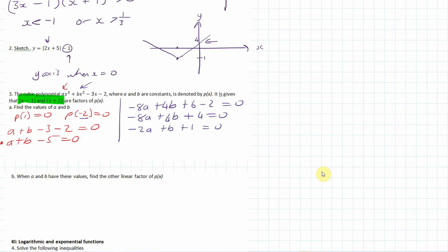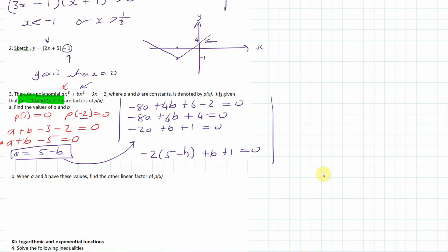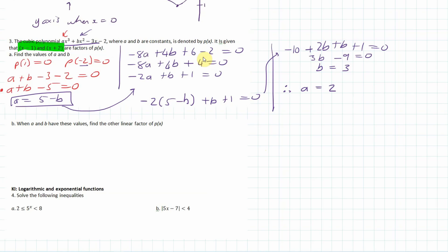We can rearrange the first equation as a equals 5 minus b, then substitute into the second: minus 2 times (5 minus b) plus b plus 1 equals 0. Expanding: negative 10 plus 2b plus b plus 1 equals 0, so 3b minus 9 equals 0, meaning b equals 3. Therefore a equals 5 minus 3, which is 2.